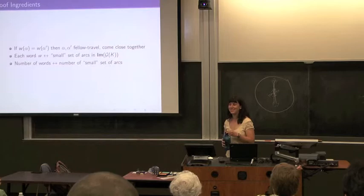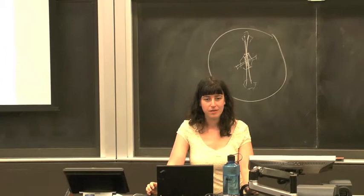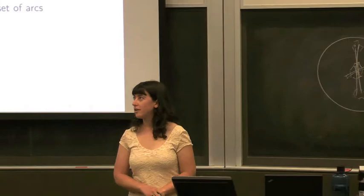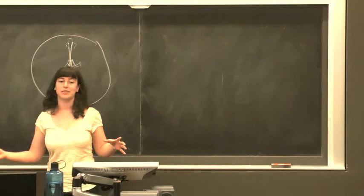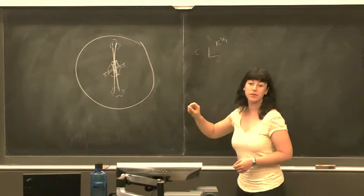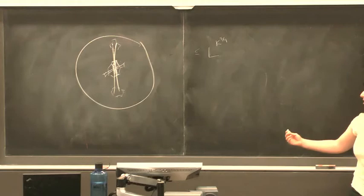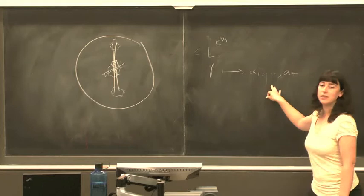Question from audience: you sketched how to get results for closed surfaces from results for pairs of pants, and you've stated results for pairs of pants — what results can you get on closed surfaces? Here's the thing: the method with pairs of pants you have to refine, and it gets very technical. Roughly you get something like L to the K^(3/4) as an upper bound on growth.